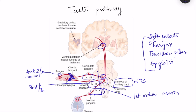From the nucleus tractus solitarius, information travels to the thalamus — specifically the ventroposteromedia nucleus of the thalamus — forming the second order neuron. An important speciality here is that there is no crossing over; the pathway remains ipsilateral.